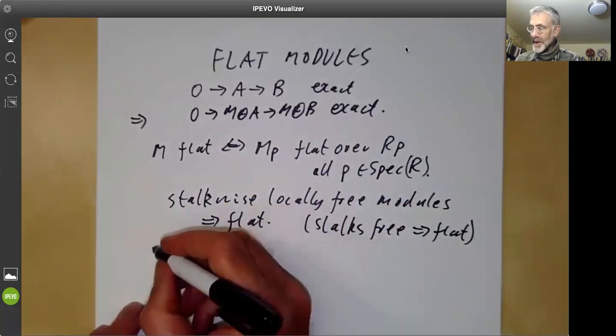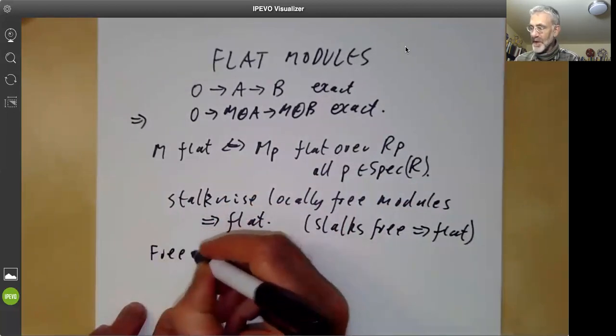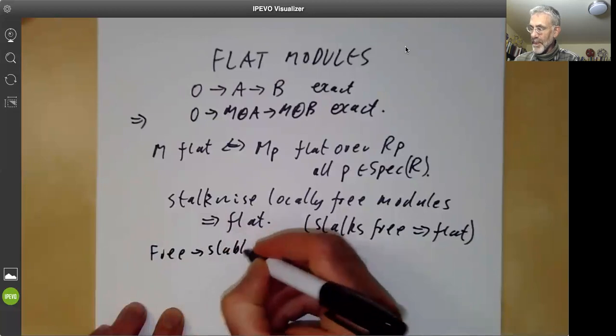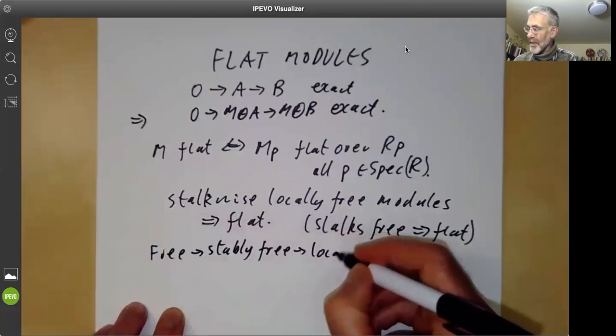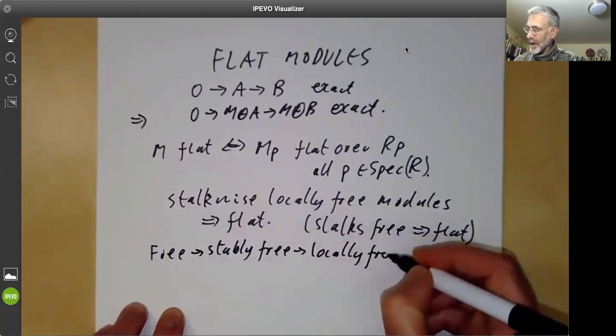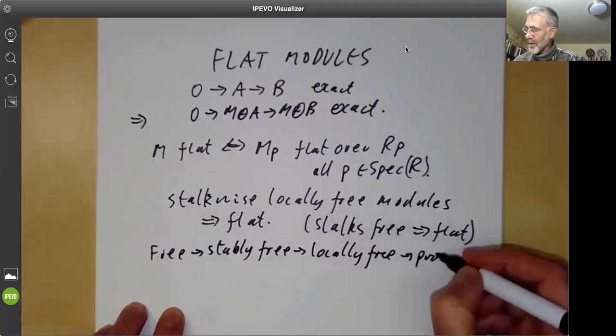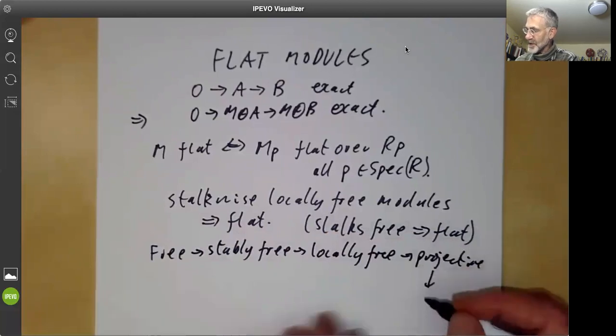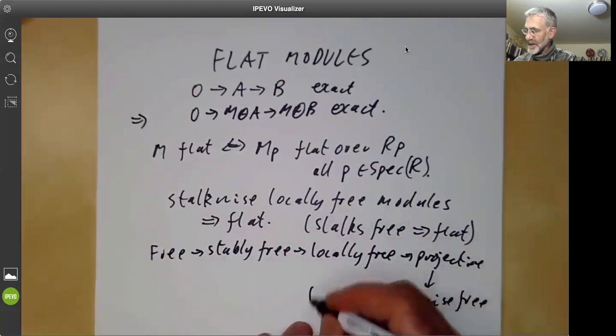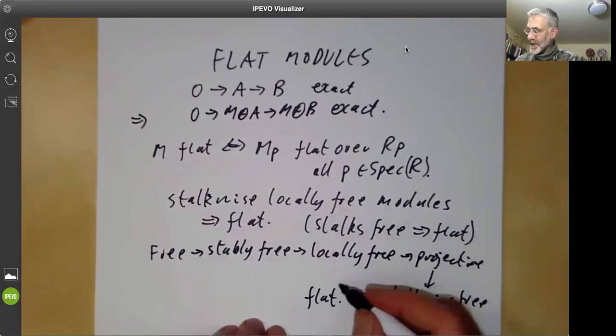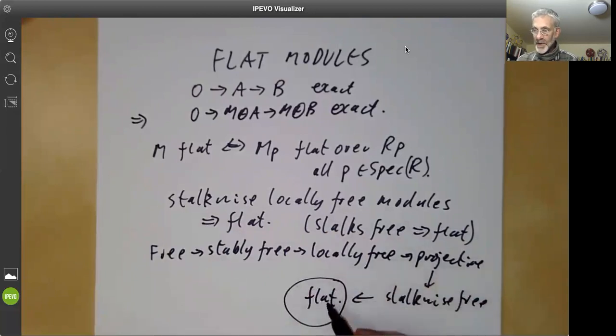So to summarize, we've shown that free modules are stably free, and these are locally free, and these are projective. And projective ones are stalkwise free, and stalkwise free are flat. And out of all these conditions, it's probably flatness that's the most useful.